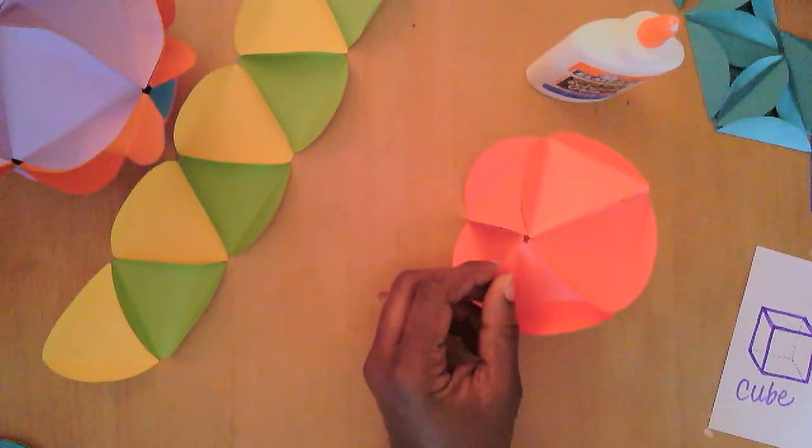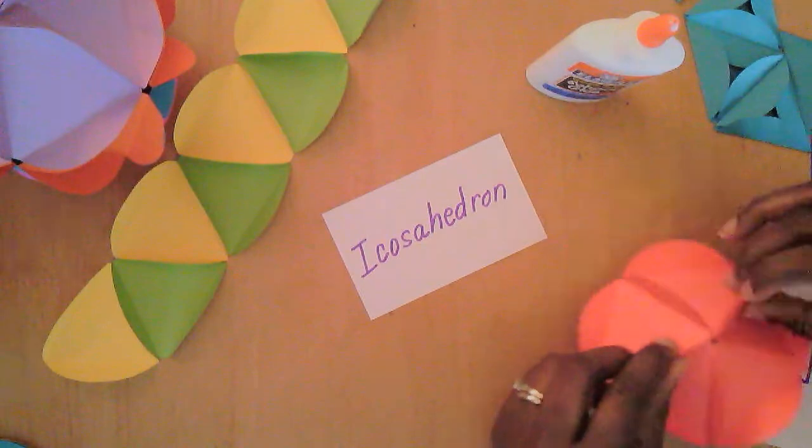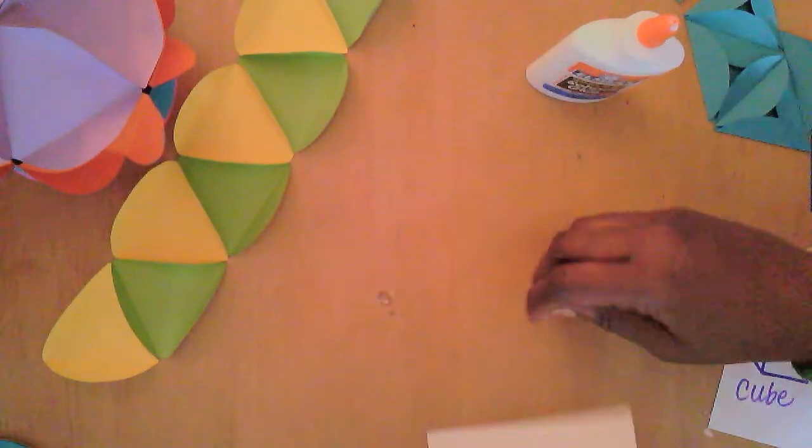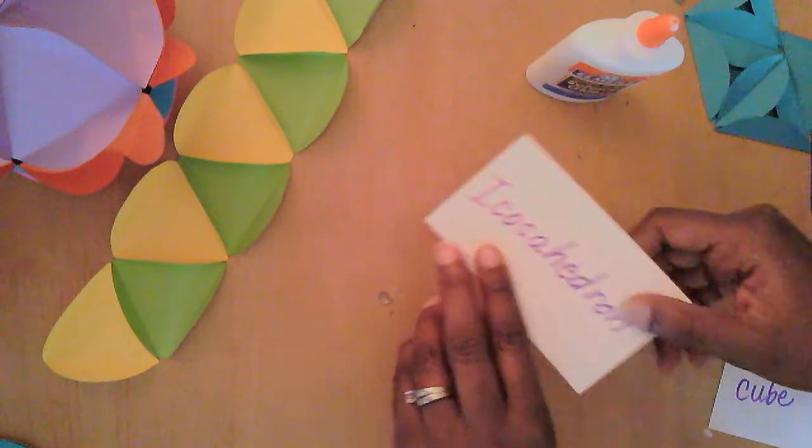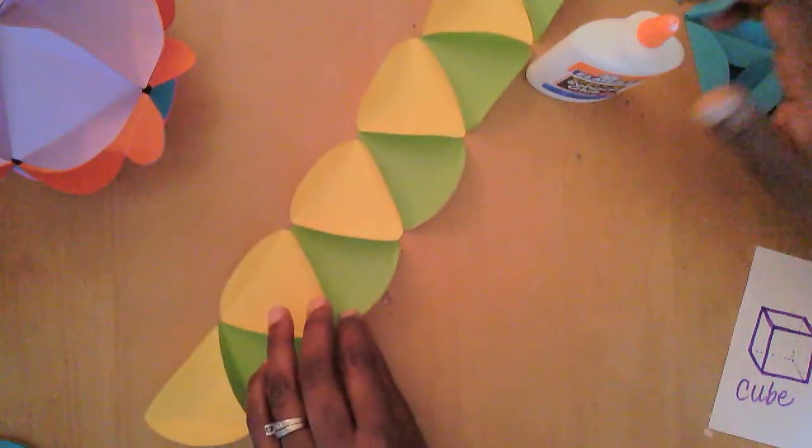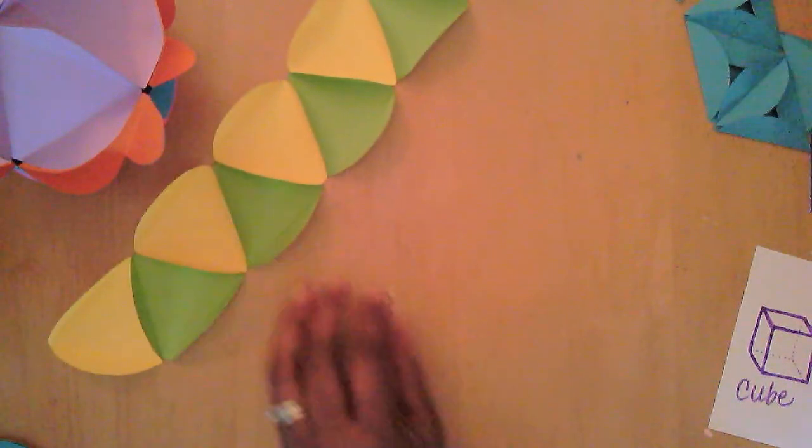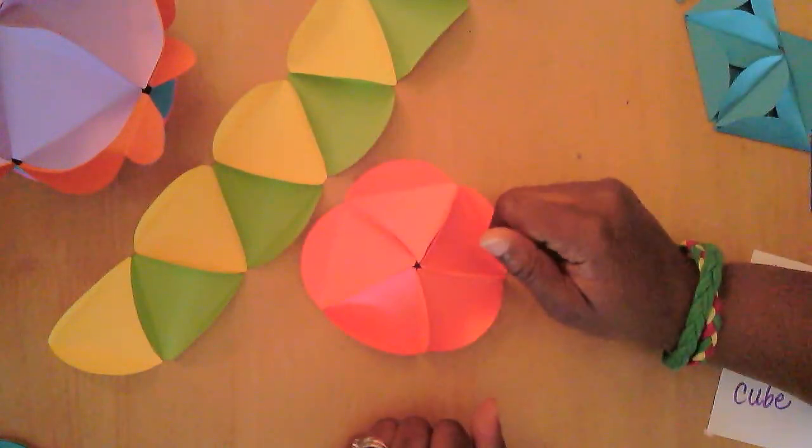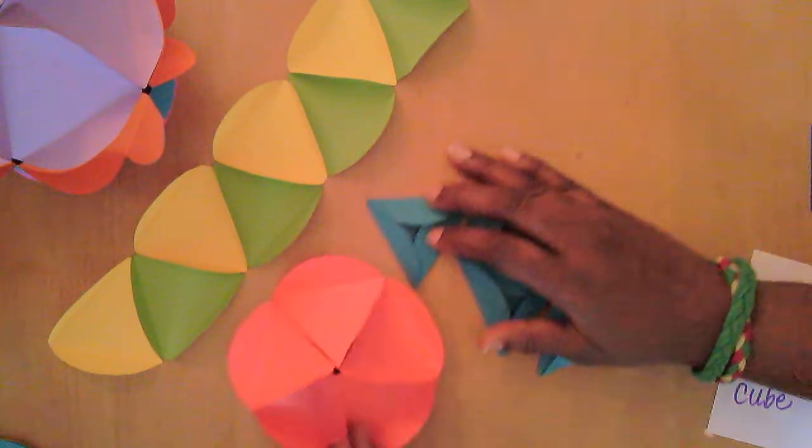And remember we're making an icosahedron. It has how many sides? 20. So we have 10 here. And we have five here. That's 15. So now it's time to do the last five.